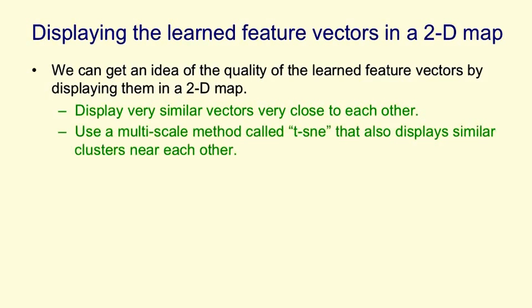We're going to use a multi-scale method called t-SNE. You can look up t-SNE on Google and discover how it works if you want. And t-SNE is able, in addition to putting very similar words close to each other, it's also able to put similar clusters close to each other. So it gives you structure at many different scales.